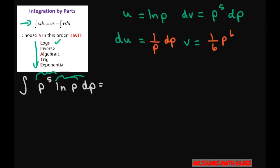And then you just use your formula. So we have this and we're going to write our u, which is substitute u for ln p times our v, which is one sixth of p to the sixth.